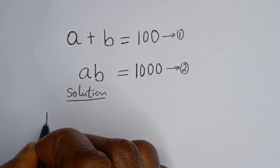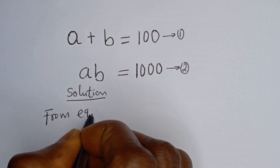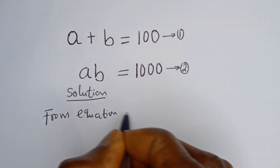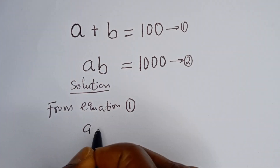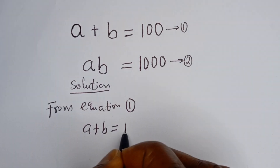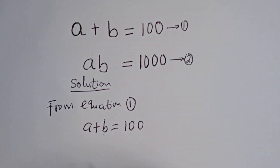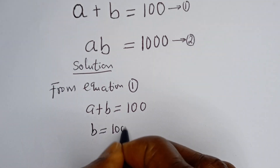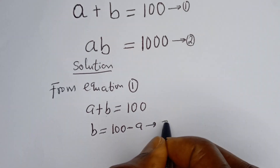From equation 1, we have A plus B is equal to 100. Let's make B the subject of the formula. B is equal to 100 minus A. Let's call this equation 3.